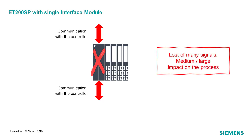For some applications, such failure can damage or destroy the product manufactured and generate considerable loss of revenue, as well as brand image. Therefore, for such applications, a higher availability is required for the ET200SP station.